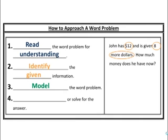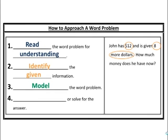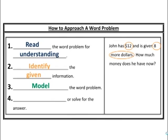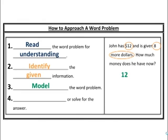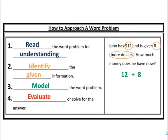Step three: model the word problem. At this point we understand the plot and we see our characters — now we need to translate. We have words; we need math. Translate it into a mathematical model. You can draw a picture, write an expression, write an equation — whatever models or translates the word problem into mathematical terms, whatever makes sense for you. I have twelve dollars, I got eight more — to me that models it very well.